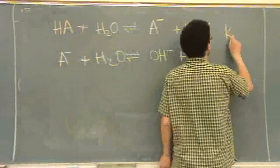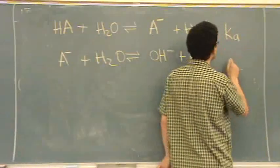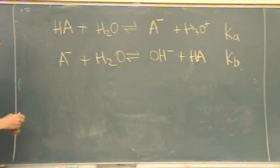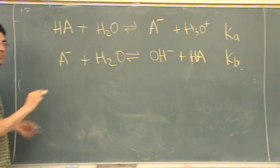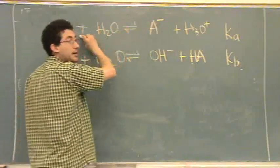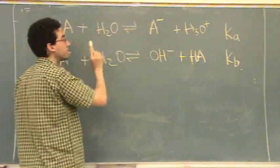The top one we call a KA, has to be written in that form. The bottom one we call KB. Do you want me to write out KA equals this times this times that? You're okay with that? Okay.